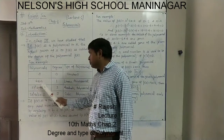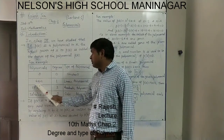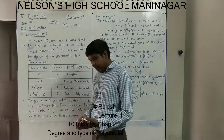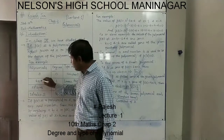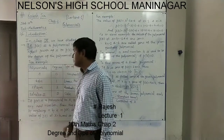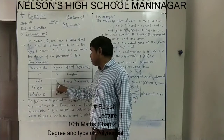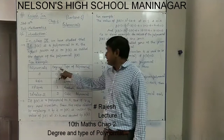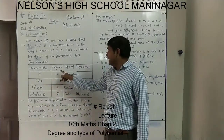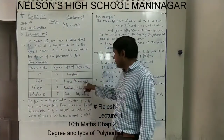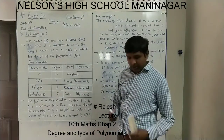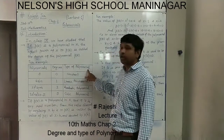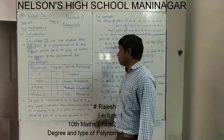The next example is 4x plus 2. It has two terms with the variable x. If no power is given, we consider it to be 1. So its degree is 1, because the highest power in this polynomial is 1 only. If the degree of a polynomial is 0, the type is constant. If the degree is 1, that type of polynomial is called a linear polynomial.